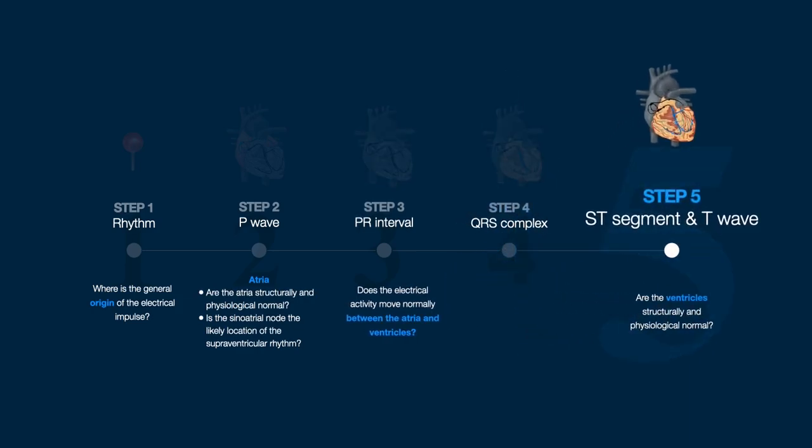Step 5: Review the ST segment and the T wave. This section is related to ventricular repolarization. Therefore, like Step 4, Step 5 can provide information regarding the structural and physiological status of the ventricles. By completing this step, one may identify ischemia, infarction, and electrolyte imbalances, such as hyperkalemia.